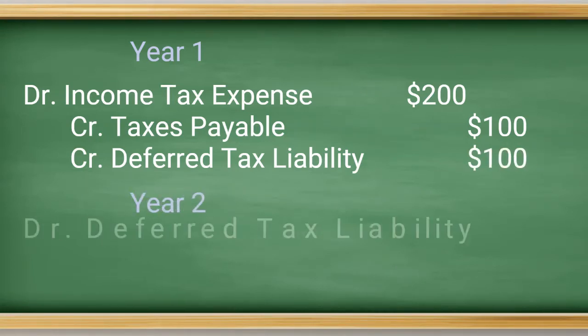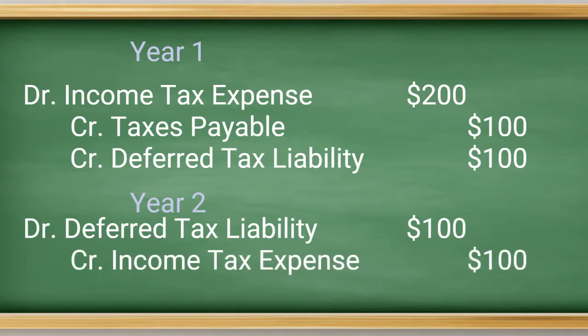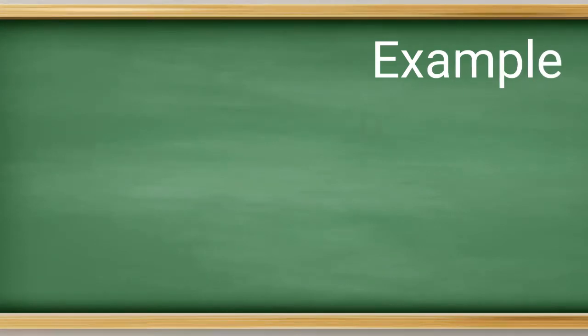Then in the next year's tax provision, you would have a debit to that deferred for $100 and a credit to the income tax expense for that year. Okay, so let's take an example of a DTL caused by depreciation.